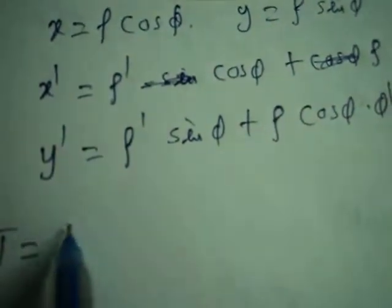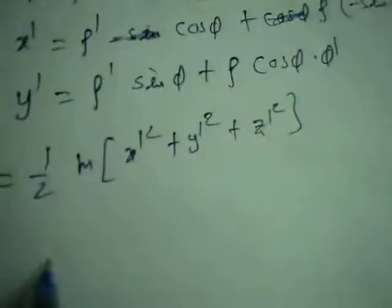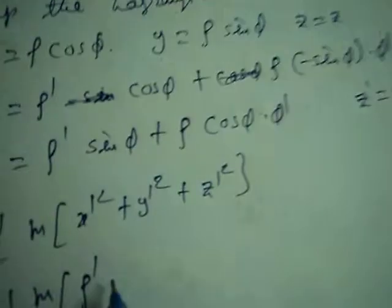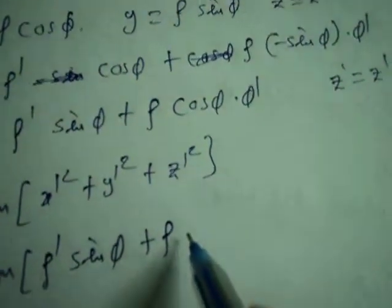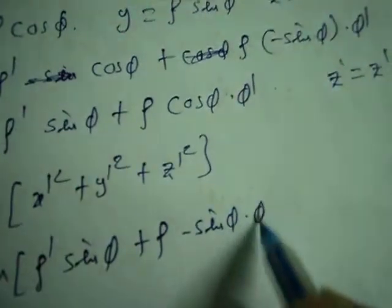So we can write kinetic energy T equal to half m times x-dot squared plus y-dot squared plus z-dot squared. That gives us terms involving rho-dot, phi, rho, phi-dot.